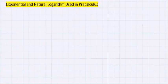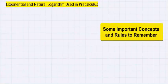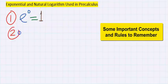Let's look at some basic rules and concepts used in natural log and exponential. Number one: exponential to the power of zero is equal to one. Next, exponential to the power of one is equal to this value.